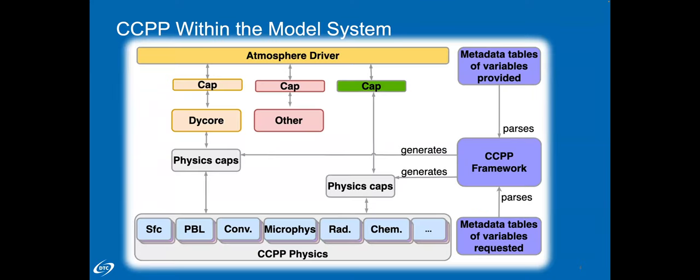On balance, using the CCPP may be a little different, but in the end it's doing the same things, just with some standardization and code auto-generation going on. In this diagram, the atmosphere driver box represents the main calling program — perhaps the DICOR in some models — typically responsible for things like time integration, calling all connected components, and maintaining a model's state. The CCPP physics on this diagram corresponds to the CCPP physics repository, which is a collection of physics with potentially more than one of each type — for example, several different microphysics schemes, convection schemes, et cetera.